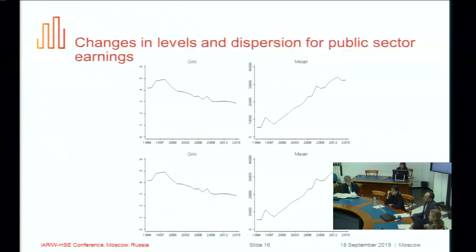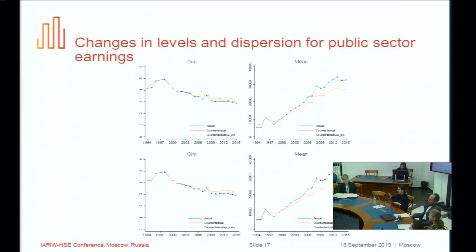Now the last section: changes in levels versus changes in dispersion. When we analyzed the impact of earnings, we simply fixed income levels in time at the 2000 level. What we do here is fix them but then allow them to increase by the average growth of total household income between two periods. For the second part, we increase it by the average growth of public sector earnings. The blue line is the actual state, the orange line is when we fix income levels, and the dashed orange line is when we allow it to grow as fast as total household income or public sector earnings. The dashed orange line comes back to the actual state of the world.